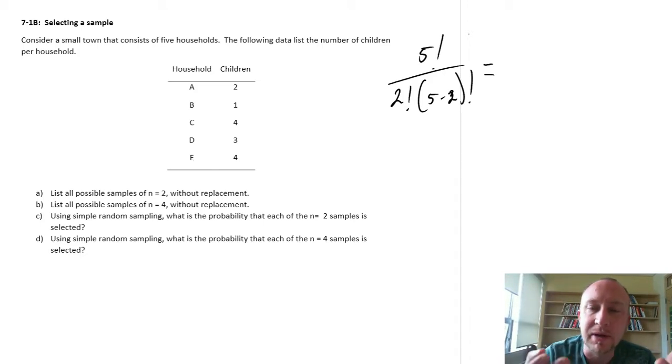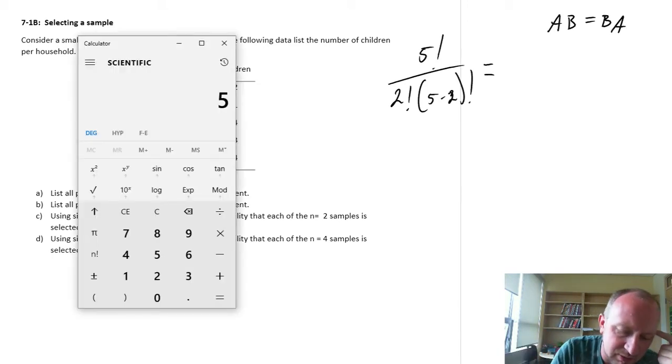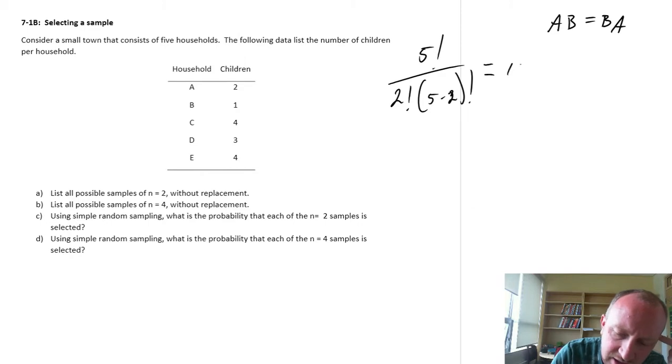We're looking at combinations because order doesn't matter. For example, if I have one sample that contains elements A and B, that's the same sample as B and A. So order doesn't matter here. For this one, 5 factorial divided by 2 factorial times 3 factorial gives us 10 possible combinations of two elements in this data set.